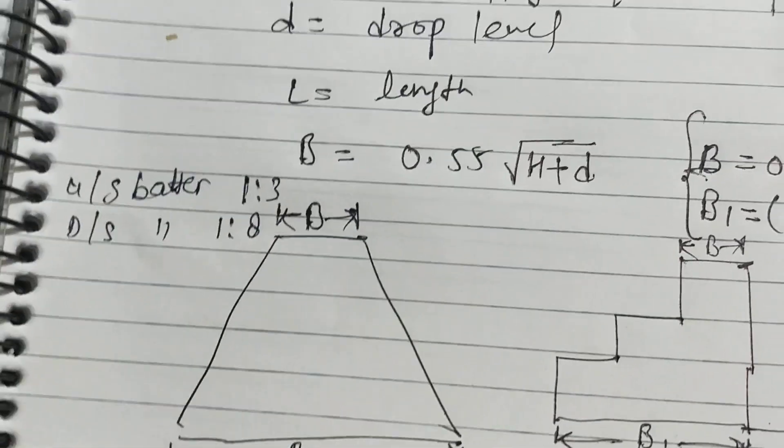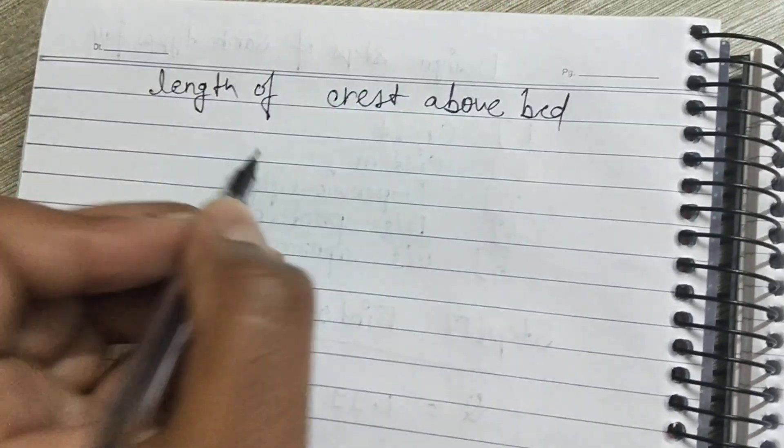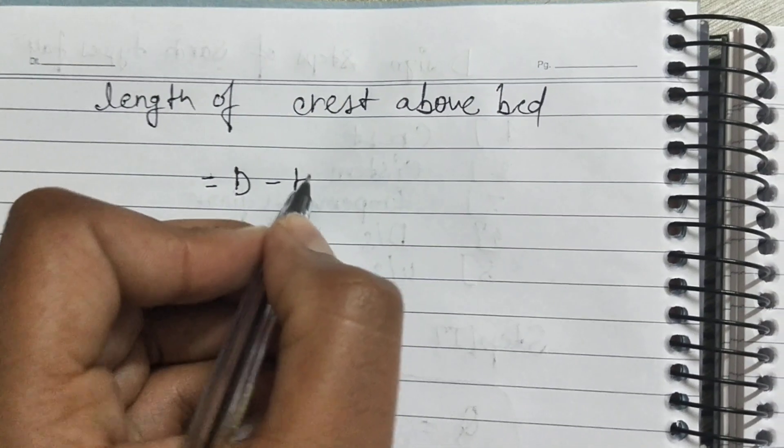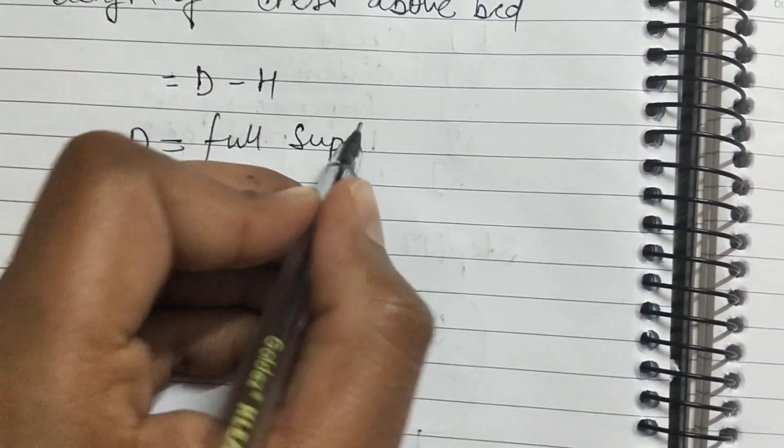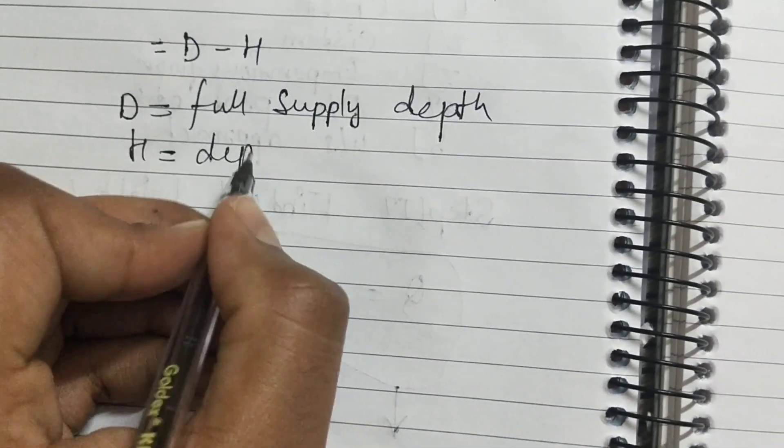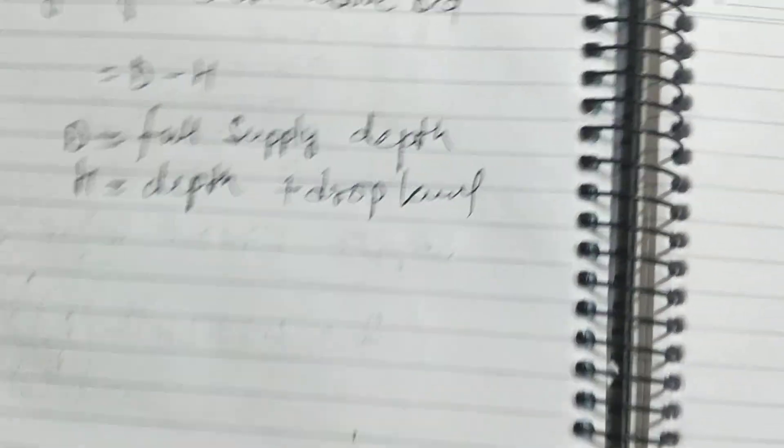You will find out base width by this formula. I will also show you in the next video when we will design. Next in this step: length of crest of bed, d - h. What is d and h here? D = full supply depth, and H = depth plus drop level.